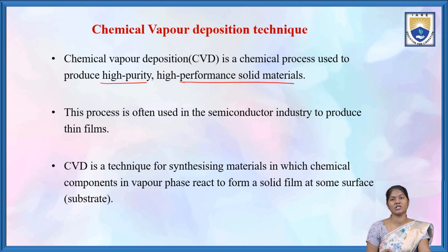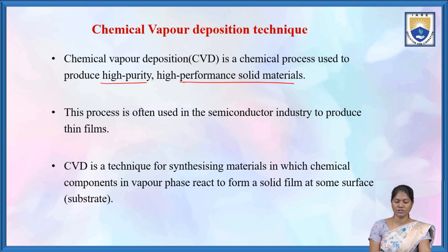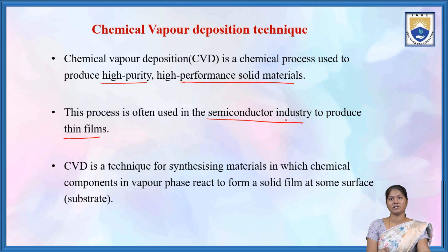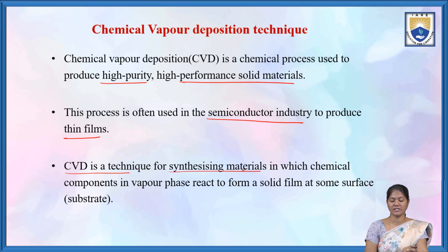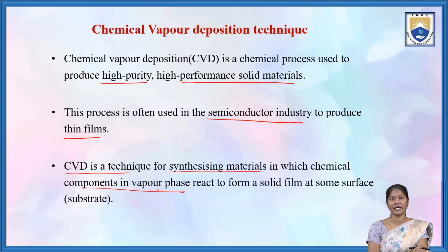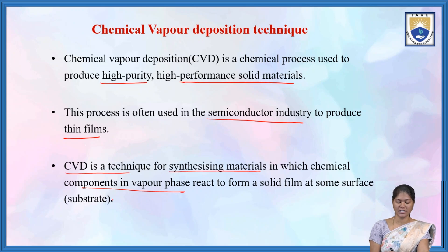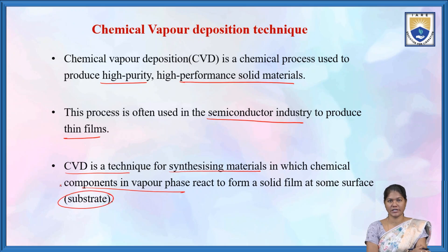This process is often used in the semiconductor industry to produce thin films. Chemical vapor deposition is a technique for synthesizing materials in which chemical components in vapor phase react to form a solid film on the substrate.